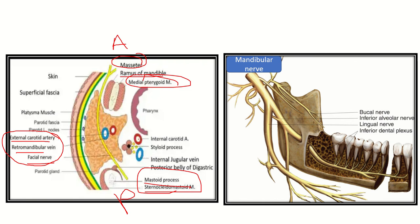There are also some other structures close to the parotid gland, such as the internal carotid artery, styloid process, internal jugular vein, and some cranial nerves — cranial nerves 9, 10, and 11. These may also be injured at times.